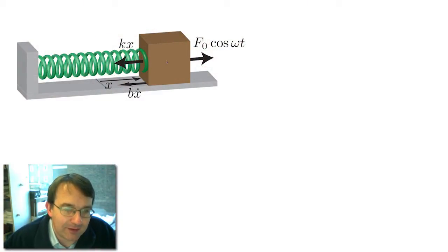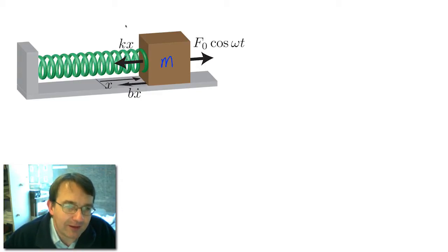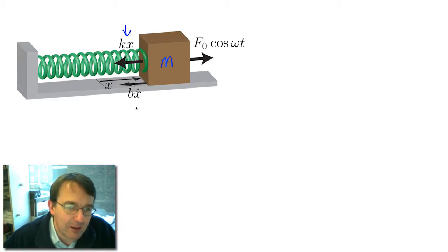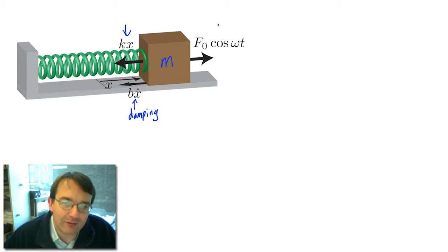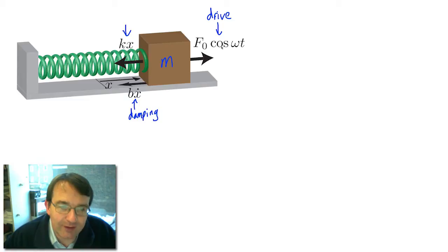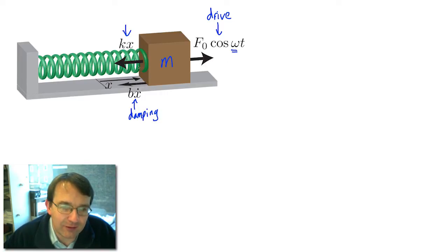Here we have the mass-spring system seen before. We have mass m, acted on by the spring force from Hooke's law — k times the displacement — a damping force opposing the motion, and finally a new drive force causing the system to oscillate. This is an oscillating drive force whose frequency is independent of the natural frequency of the mass-spring system.